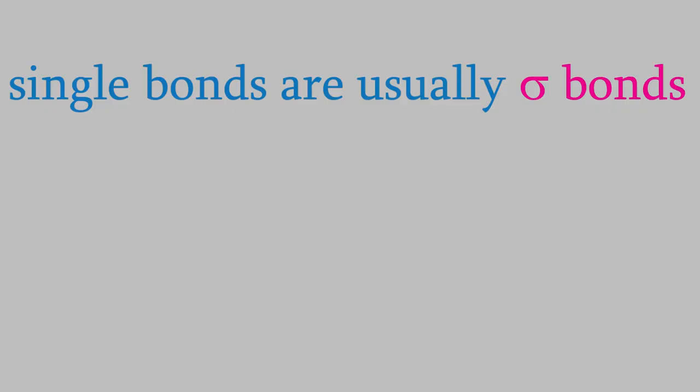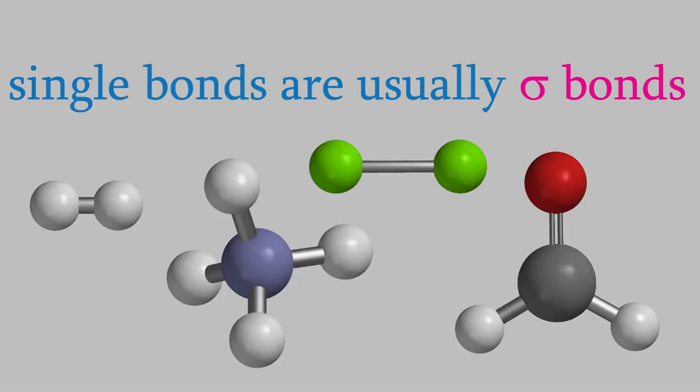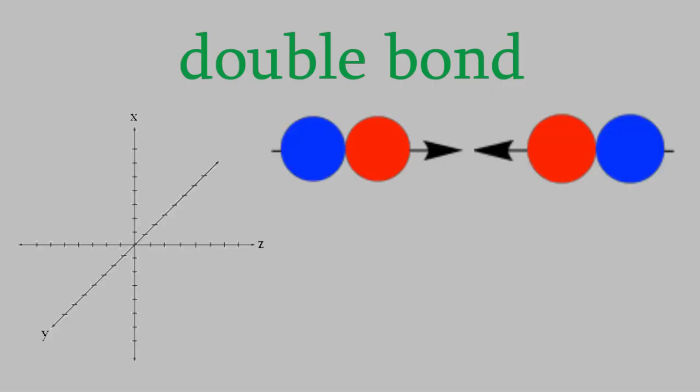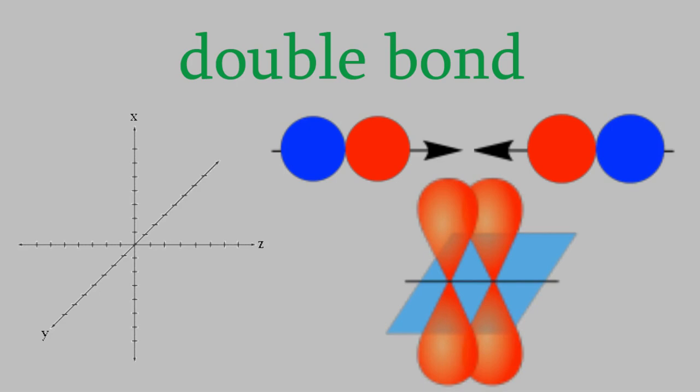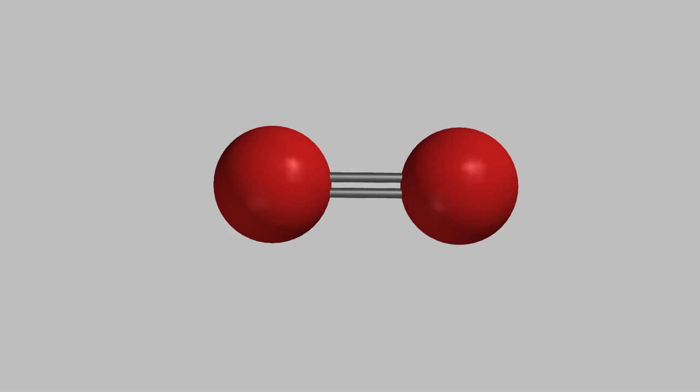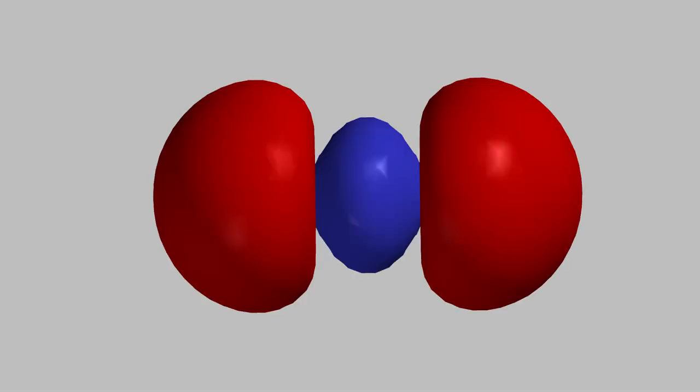Almost all single bonds are sigma bonds. All the single bonds in these molecules look circular when you view them along the bond. But what about double bonds? A double bond consists of two bonds. One of them is still a sigma bond, usually made from two p orbitals along the z-axis. But the second bond is made from two p orbitals oriented along a different axis, either the x or the y. For example, here are two oxygen atoms double bonded together. One of the two bonds is a sigma bond, made from the two p orbitals along the z-axis.